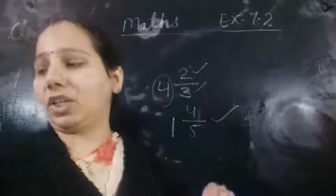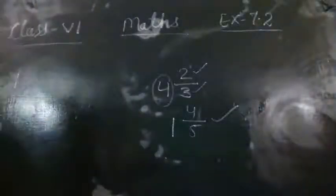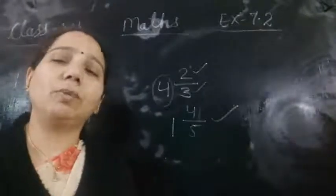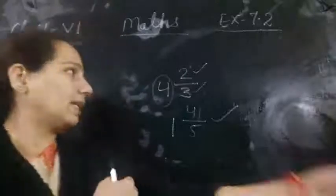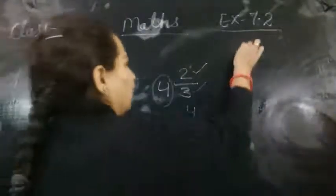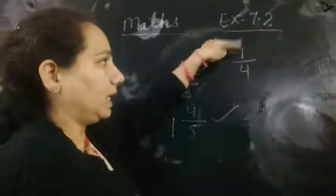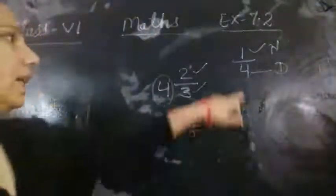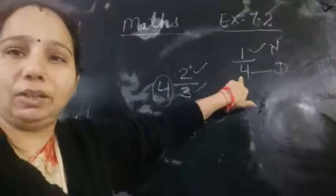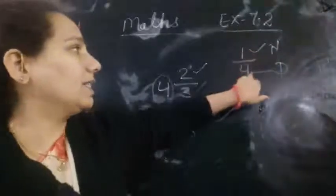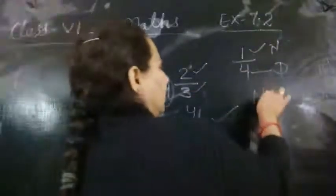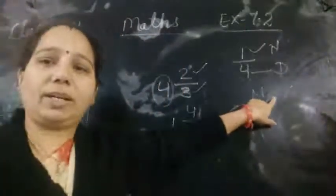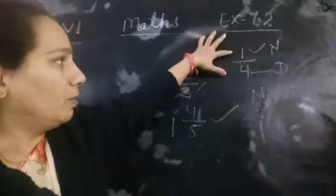Now we will start with proper fraction. What is proper fraction? What is the numerator? It means the numerator will be less than the denominator. That means the numerator will be smaller than the denominator. This is called a proper fraction — numerator is less than denominator.